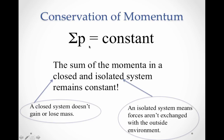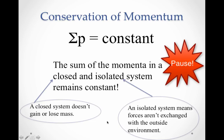It doesn't matter when you add it up — it will always be the same. A system is any collection of objects you're observing; in our case, the tennis racket and tennis ball. A closed system means it doesn't gain or lose mass — the tennis racket and ball have the same mass throughout and no parts fly off. An isolated system means there are no forces interacting with the outside world, such as a strong wind influencing the objects. Therefore our system is isolated.